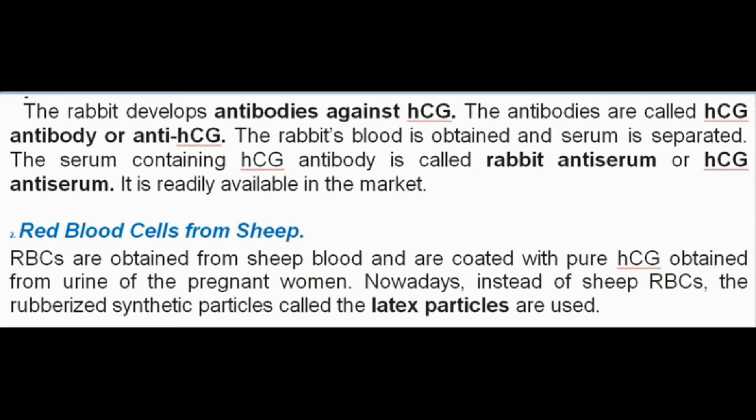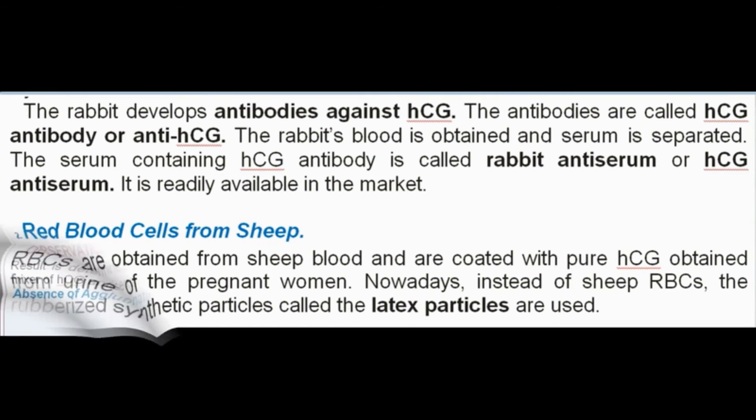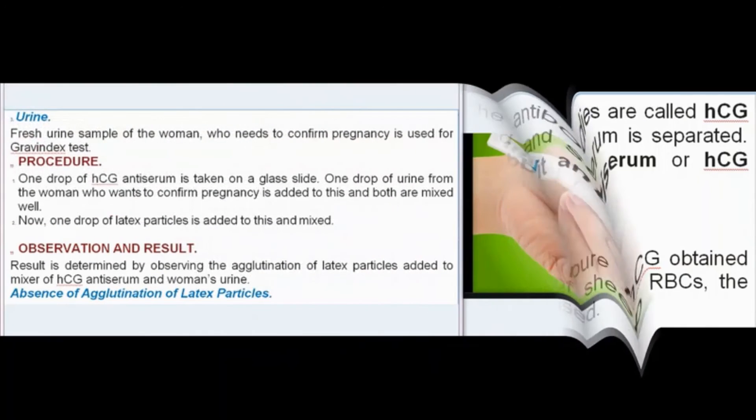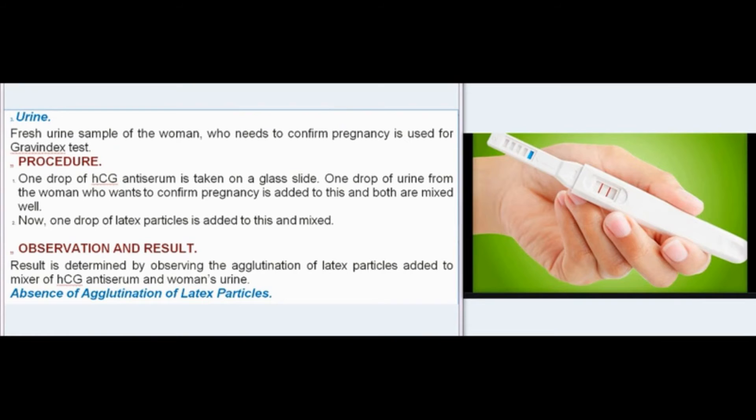Red blood cells from sheep (RBCs) are obtained from sheep blood and coated with pure HCG obtained from urine of pregnant women. Nowadays, instead of sheep RBCs, rubberized synthetic particles called latex particles are used. Fresh urine from the woman who needs to confirm pregnancy is used for the Gravindex test.